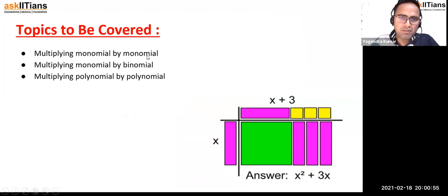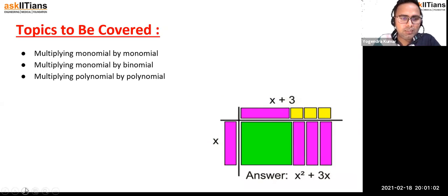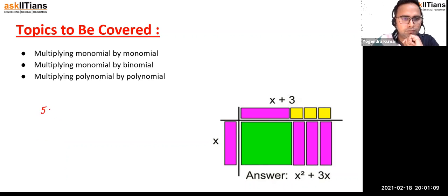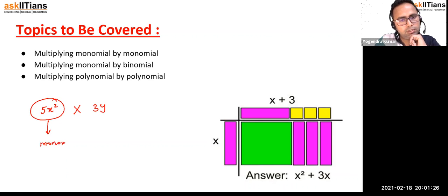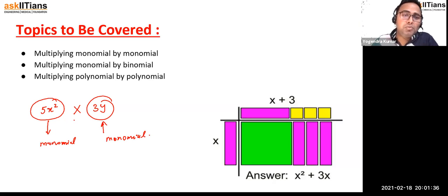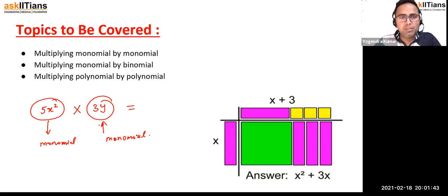Basically, monomial — we understood this in the last lecture. A monomial is an expression with a single term. For example, 5x squared is a monomial. Now I need to multiply it to some other monomial — say 3y. So we are going to learn how to multiply monomial to monomial.